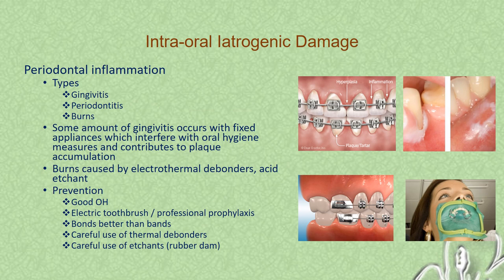Periodontal inflammation: the types commonly seen are gingivitis, periodontitis and burns. Some amount of gingivitis occurs with fixed appliances which interfere with oral hygiene measures and contribute to plaque accumulation. Burns can be caused by electro-thermal debonders and acid etching fluid. To prevent damage to the periodontium: good oral hygiene is very important. We could use an electric toothbrush and complement it with professional prophylaxis. It is better to employ direct bonds compared to cementing bands, careful use of thermal debonders, and careful use of acid etchants, preferably using a rubber dam.